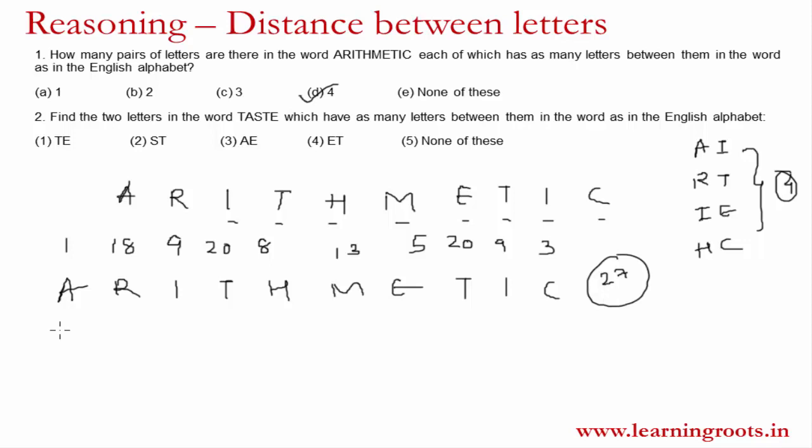So you will simply write the positions of these letters again starting from Z. So again these two should add up to 27, so it is very easy. 1, so this will be 26. If 18 is there then 9. If 9 is there then 18. 20 then 7. 8 then 19. 13 then 14. 5 is 22. 20 is 7. 9 is again 18. And 3 is 24. So this is very easy because you know 27, you know the position. So this will not take more than around 10 seconds. Now when you are doing it in test, 10-15 seconds would be enough for you to write the word, write the positions and write the deviations from 27.